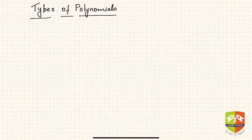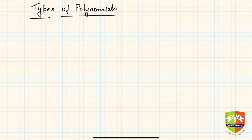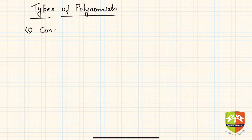In this session we are going to discuss different types of polynomials based on their degree. The degree of a polynomial is nothing but the power of the highest degree term. The first category, your first type, is the constant polynomial.